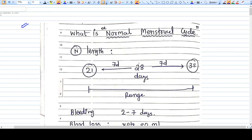What is a normal menstruation cycle? What are the criteria? What are the deviations from normal? What is AUB? What is DUB? What are the different menstrual terminologies? We will discuss all of this.